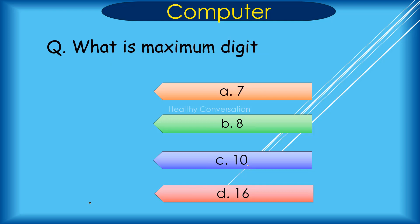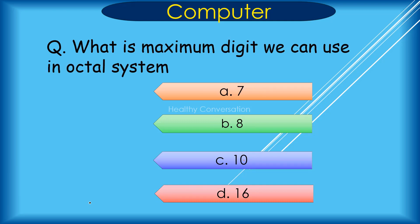Question: What is the maximum digit we can use in the octal number system? Correct answer is A. 7.